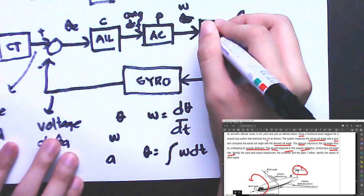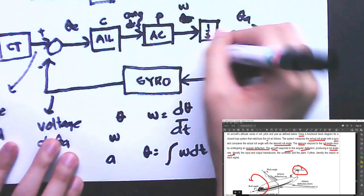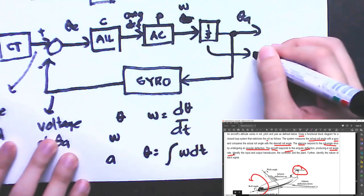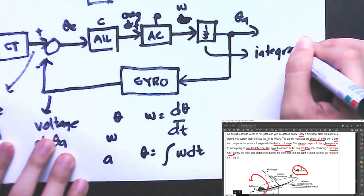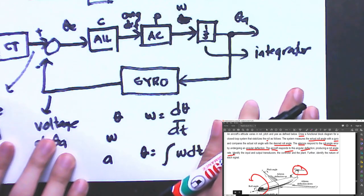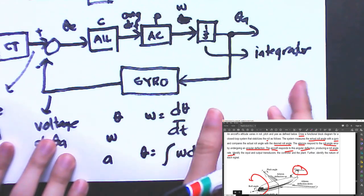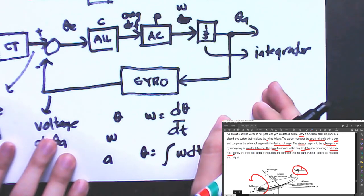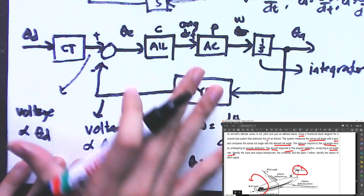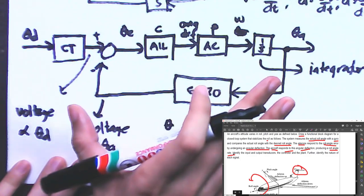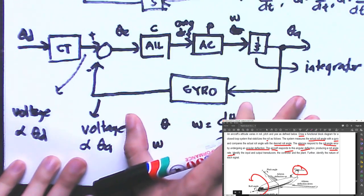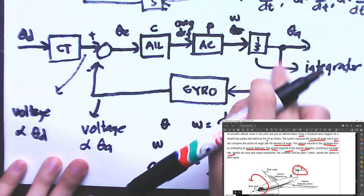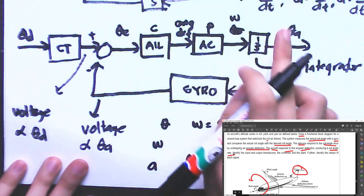For that, we introduce a special block — the integrator — represented by the symbol 1/s. This integrator performs the integral operation. This completes the roll stabilizer system block diagram. The symbol 1/s is explained by Laplace transform theory, and it is the universal symbol for an integrator — even in MATLAB, this symbol is used for the integrator.